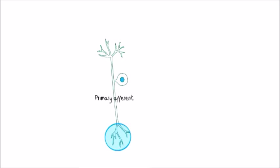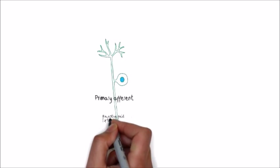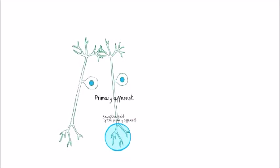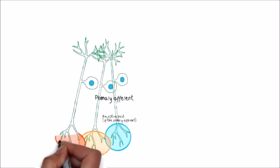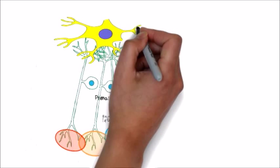Each neuron has a receptive field from which it transduces nociceptive stimuli into nerve impulses and transmits the information to the dorsal horn of the spinal cord, where it synapses on a second-order neuron.